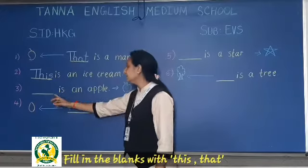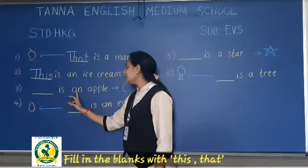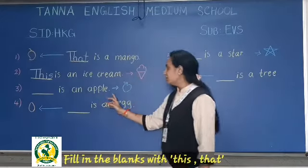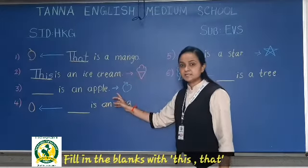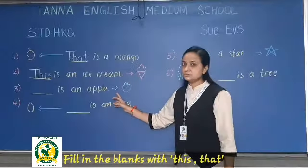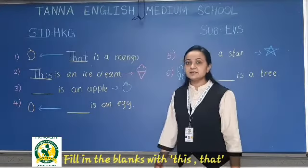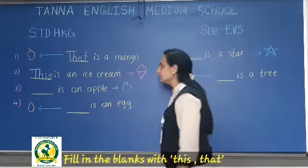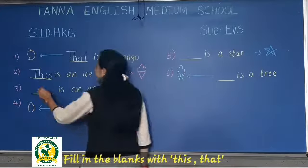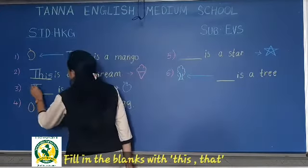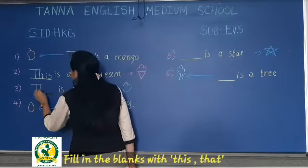Now the third one — dash is an apple. Apple is near to us. So we write 'this.' This is an apple.